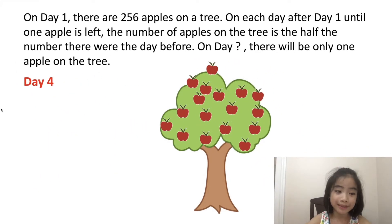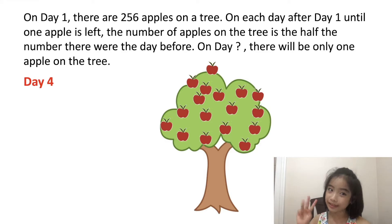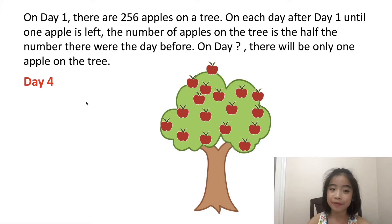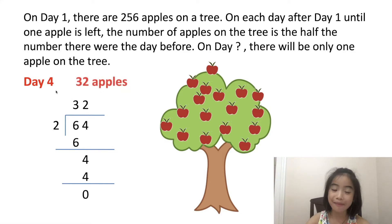Now let's figure out how many apples there are on day four. We know that on day three there are 64 apples. So the number of apples on day four is half the number of apples on day three. Half of 64 is 32. So on day four, there are 32 apples.